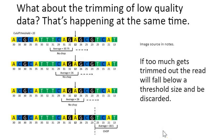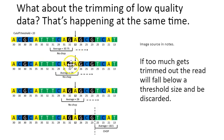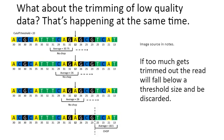At the same time that Trimmomatic is looking for adapter sequence or read-through, it's also looking for low-quality data. You can optimize this parameter or use the defaults. Trimmomatic will look through the sequence data between the adapter sequences and look for averaged quality or PHRED scores. If the quality on average falls below a set threshold, it will chop out that data and keep the remainder. So it does some quality filtering as well.